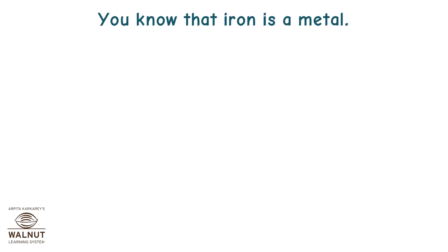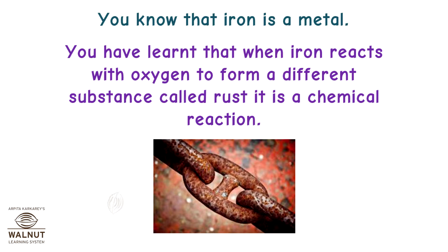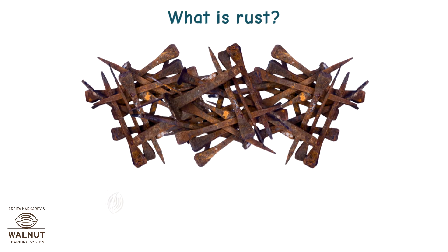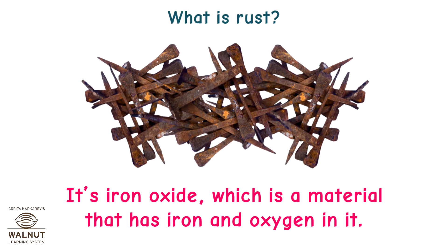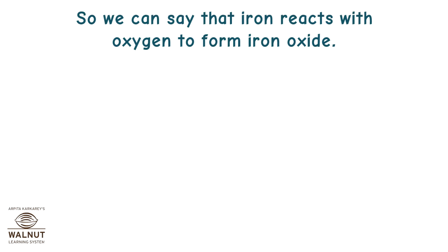Reaction with oxygen. You know that iron is a metal. When iron reacts with oxygen, it forms a different substance called rust — that is a chemical reaction. Rust is iron oxide, which is a material that has iron and oxygen in it. So we can say that iron reacts with oxygen to form iron oxide.